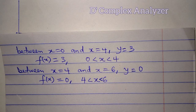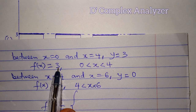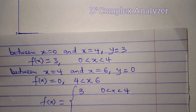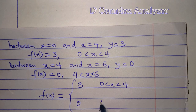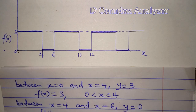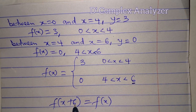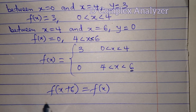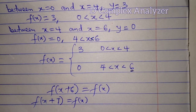Let us write this as a piecewise function. f of x is equal to 3 in the interval 0 less than x less than 4, and f of x is equal to 0 in the interval 4 less than x less than 6. This 6 shows that it is the period of the periodic function. So we can write f of x plus 6 is equal to f of x, because 6 is the period. The smallest positive value of t such that f of x plus t equals f of x — in this case t is 6. 6 is the period of that function.